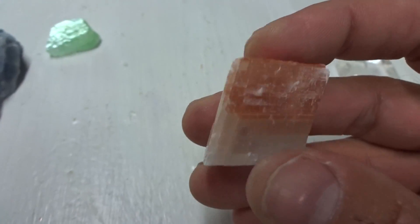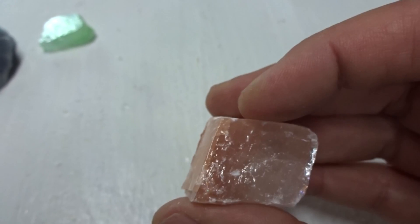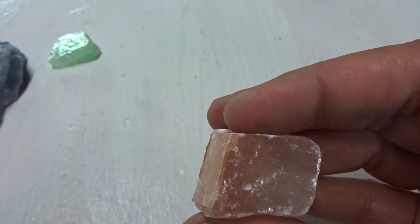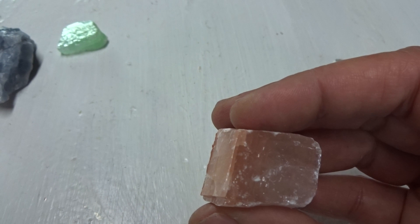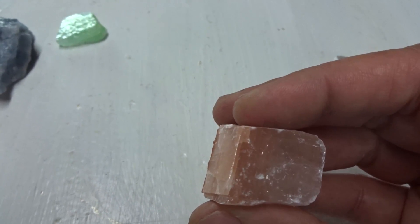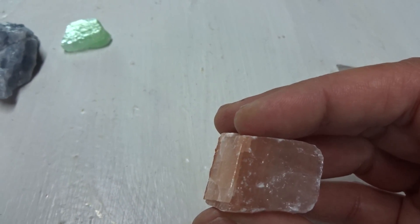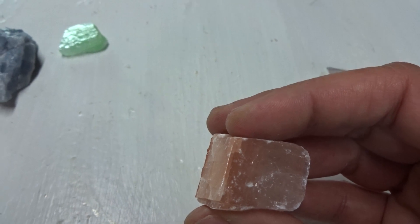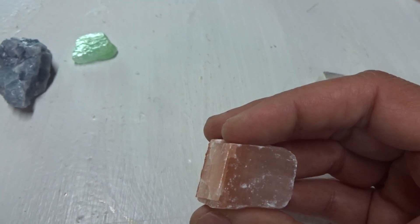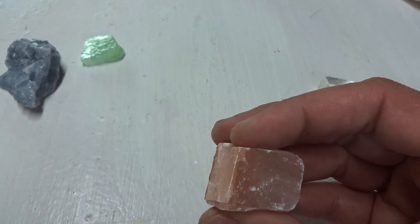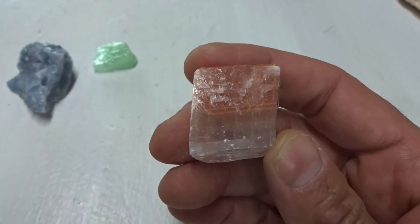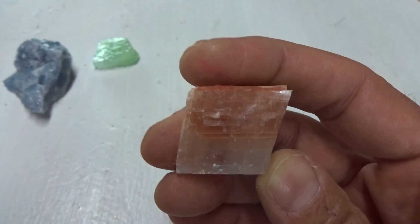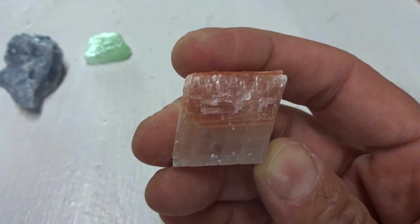This is red calcite. Manganese and chromium are elements that make red calcite. It makes it red.